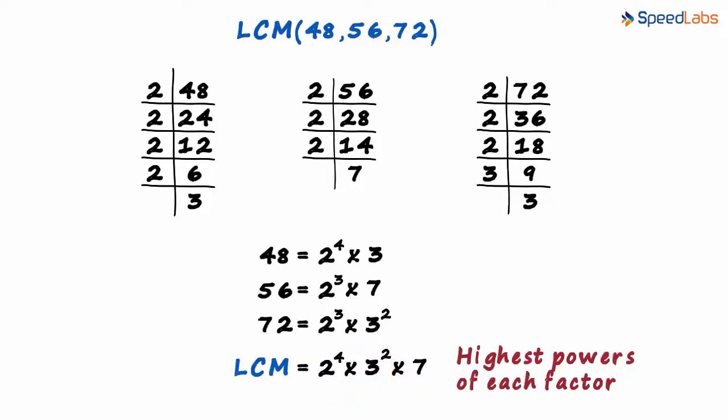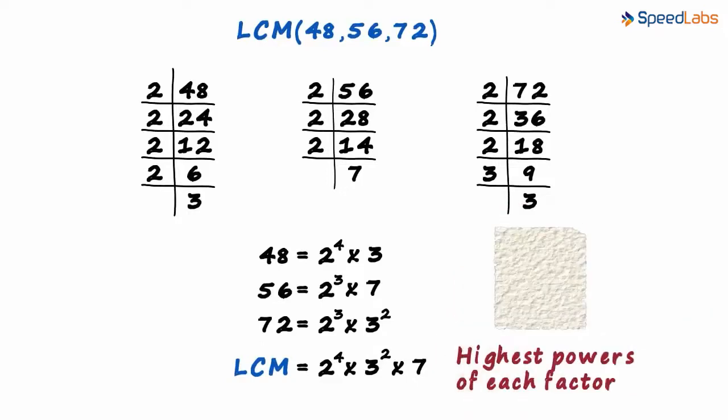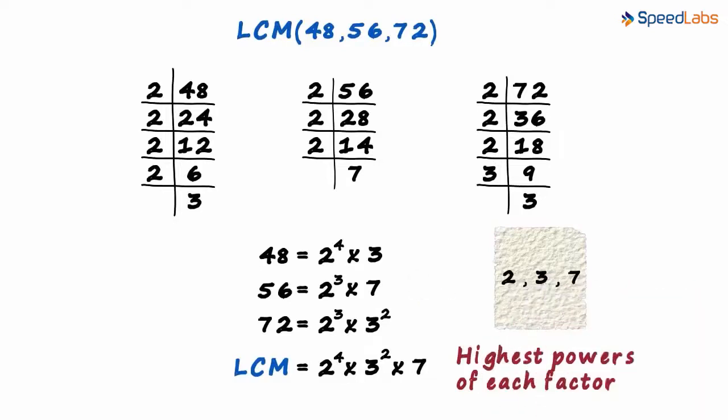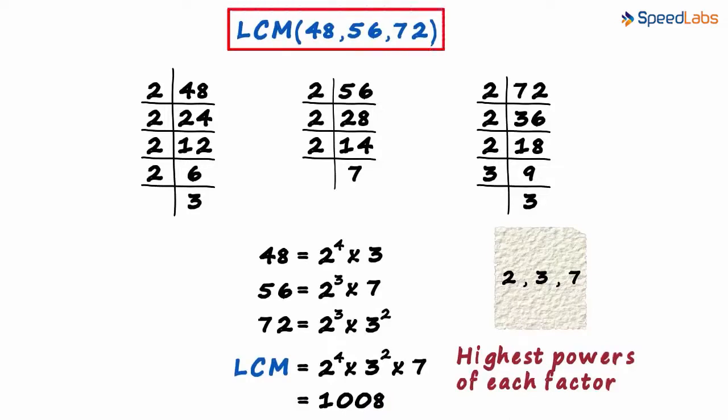The first thing you should do after you write the numbers in exponential form is jot down all the factors that are present. Here the factors that are present are 2, 3 and 7. Once you do that, you look for the highest powers of each of these. Anyway, solving this you should get the answer as 1008. That's the LCM of these three numbers.